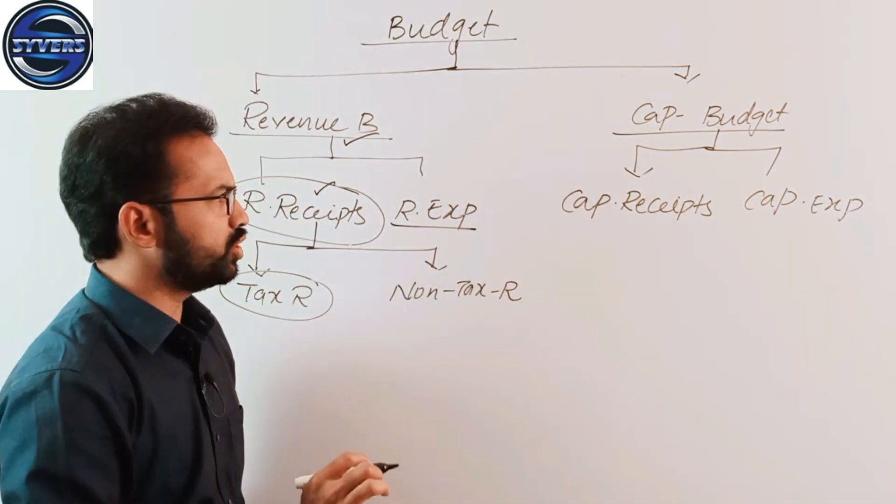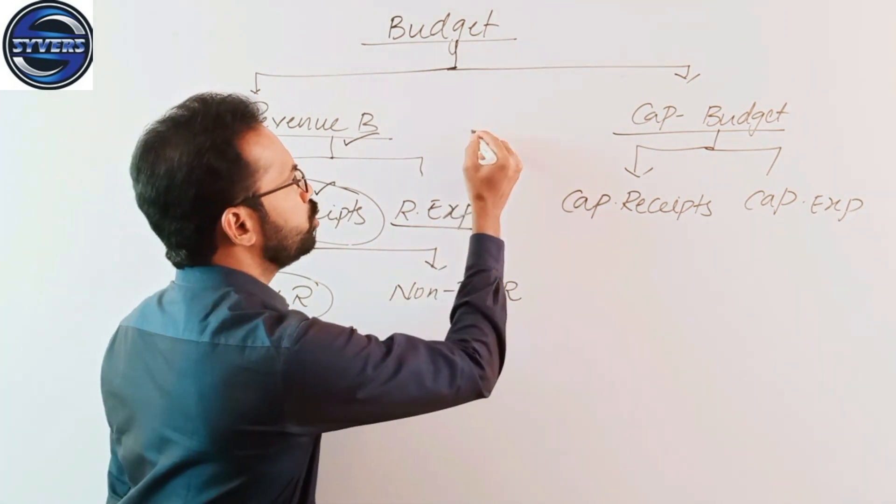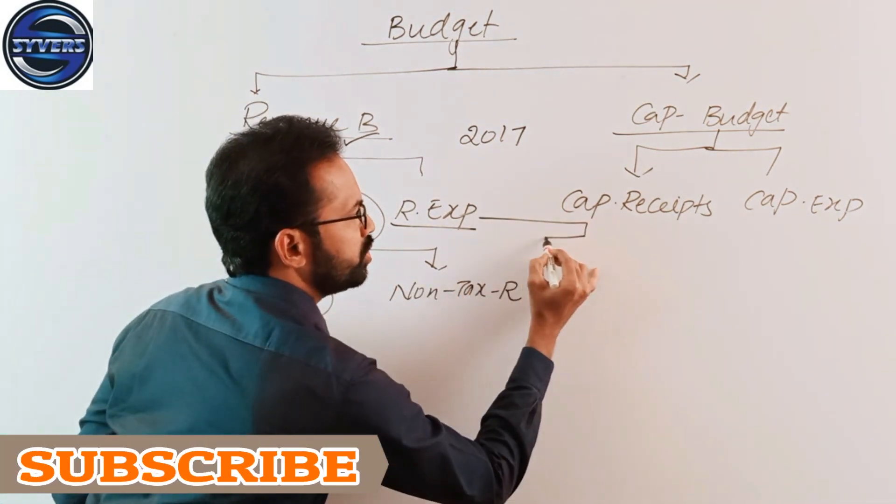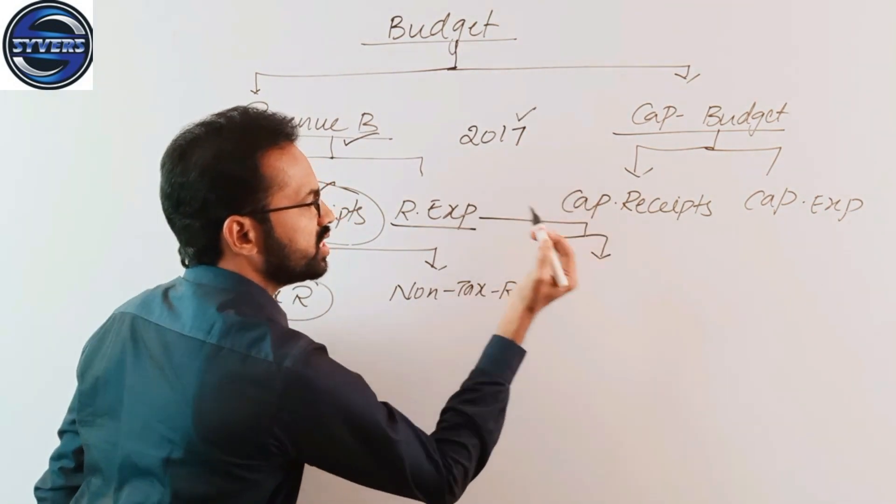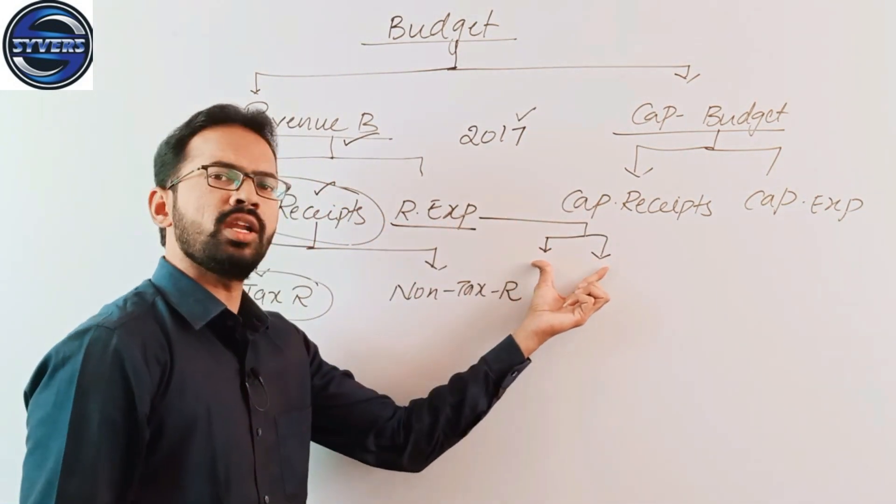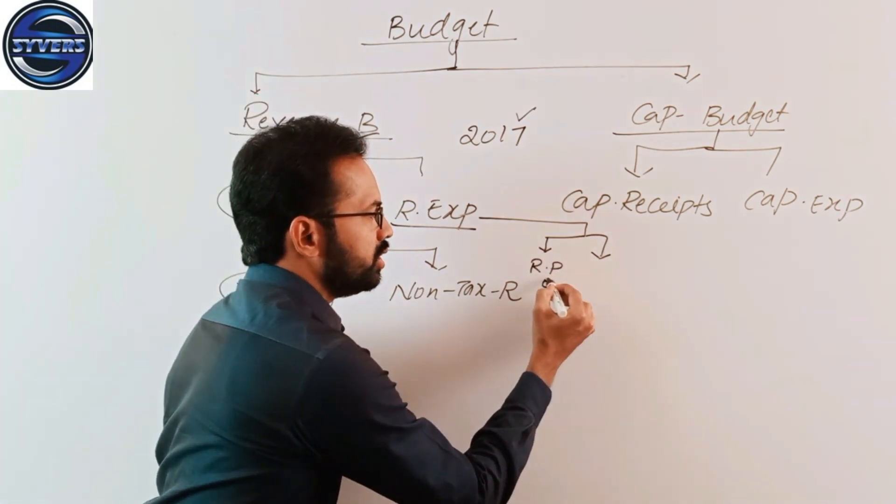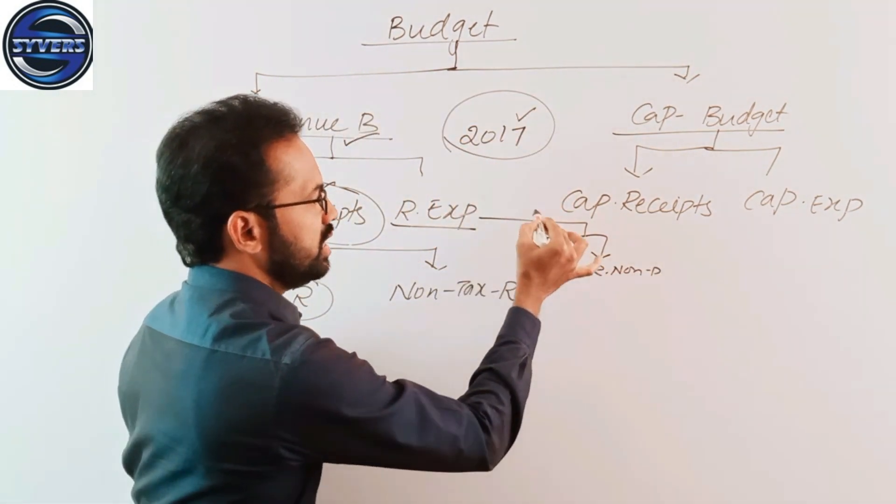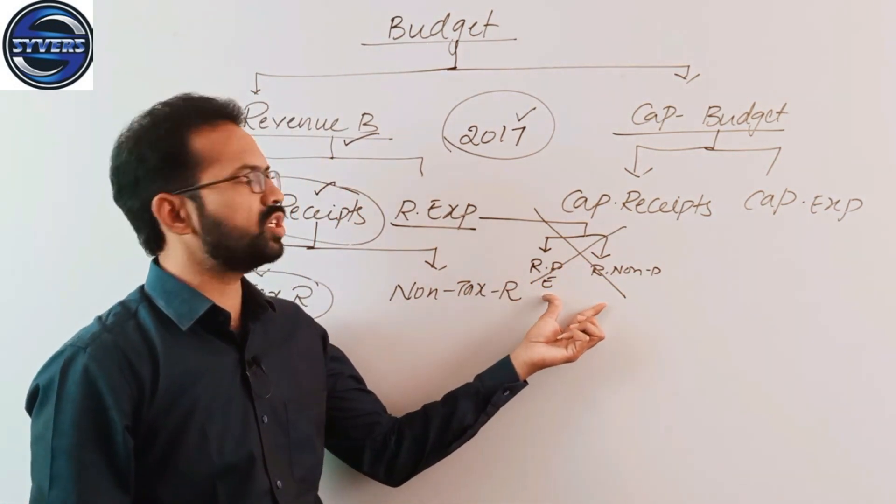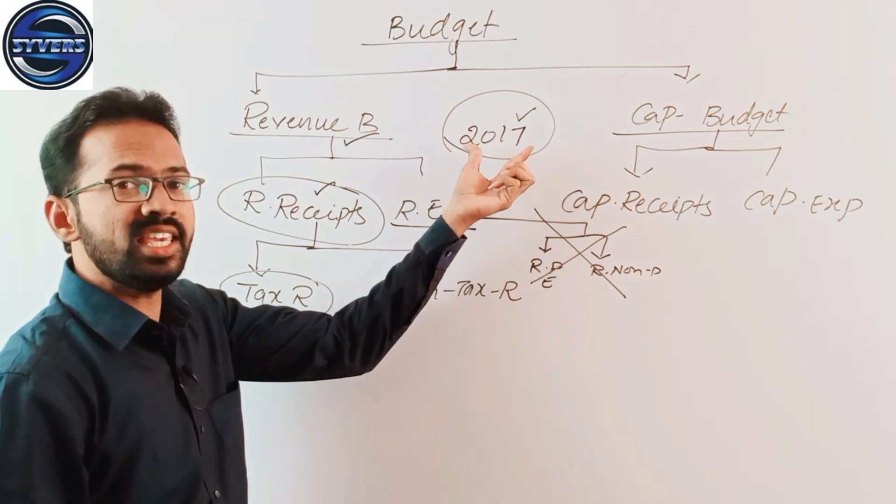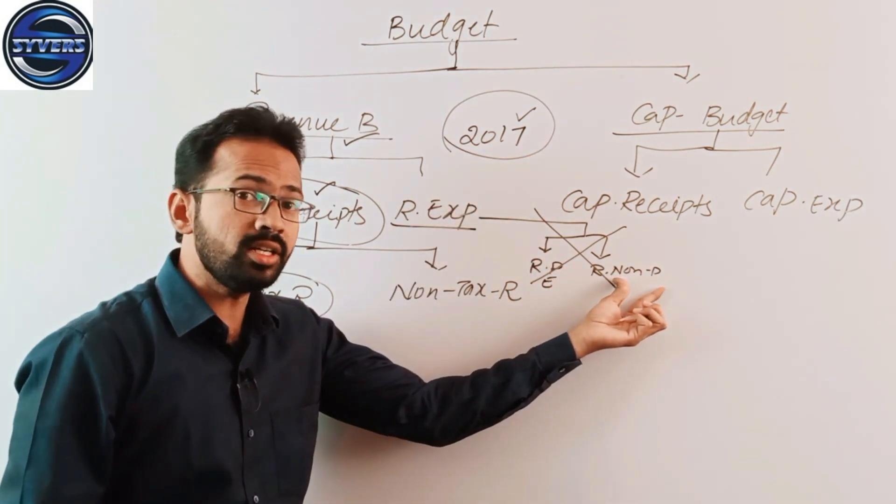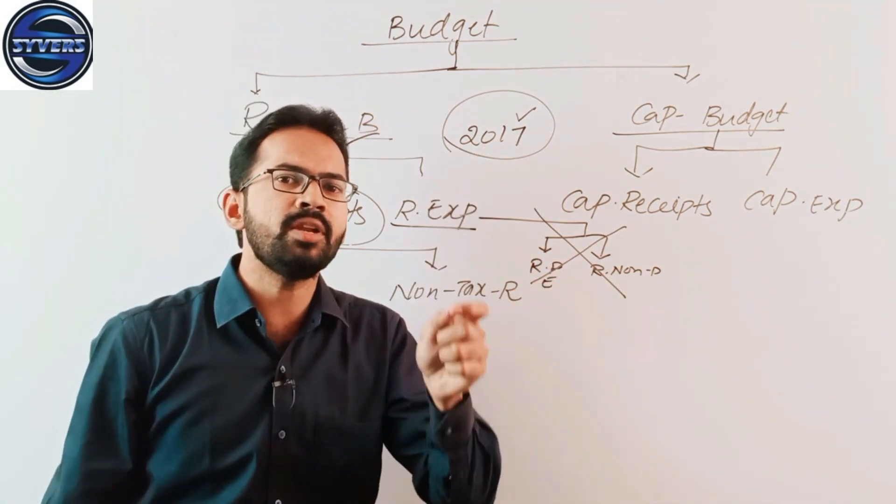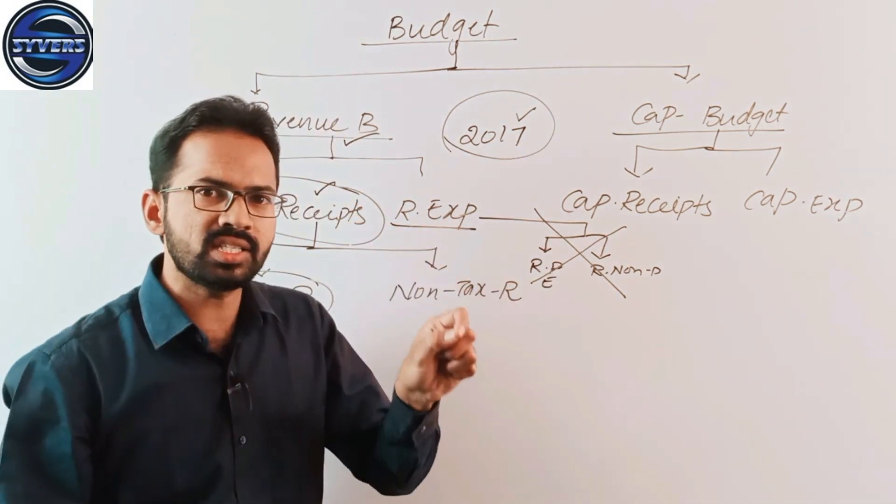Revenue expenditure has types. Actually until 2017, there were subdivisions in revenue expenditure: revenue plan expenditure and revenue non-plan expenditure. But from 2017 these terms were removed from the budget. This is very important for competitive exams. These terms were removed in 2017.